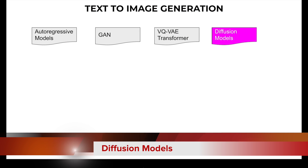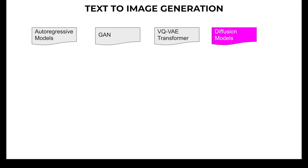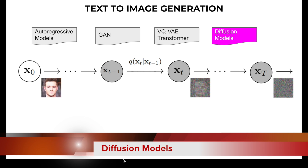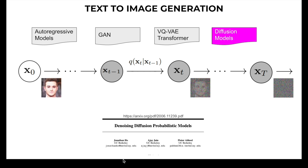Diffusion models are generative models used to generate data similar to the data on which they were trained. Fundamentally, diffusion models work by destroying training data through the successive addition of Gaussian noise, then learning to recover the data by reversing the noising process. After training, diffusion models can generate data by passing randomly sampled noise through the learned denoising process.